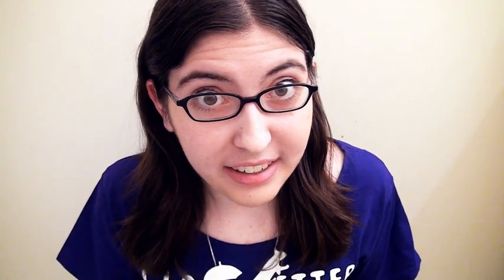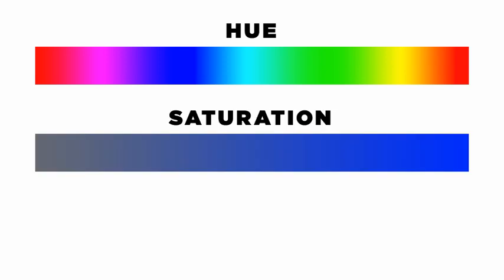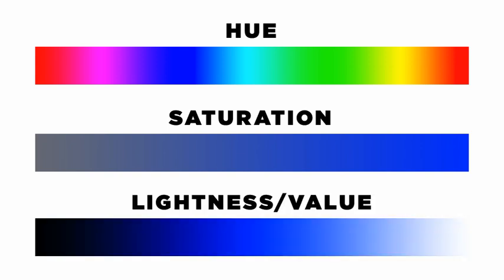So now let's look at hue and saturation. Hue is basically what the color is, and saturation is how intense the color is. Lightness, which could also be called value, is how light or dark the color is. By manipulating these three variables, we can make any color you want.